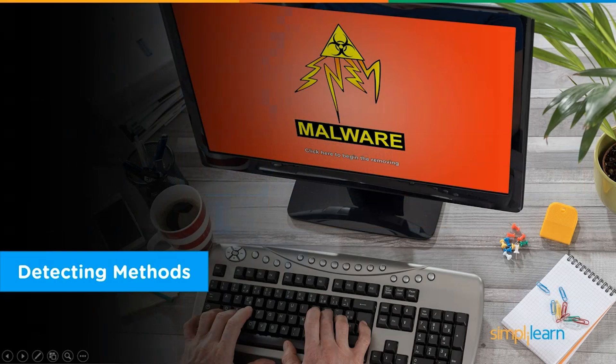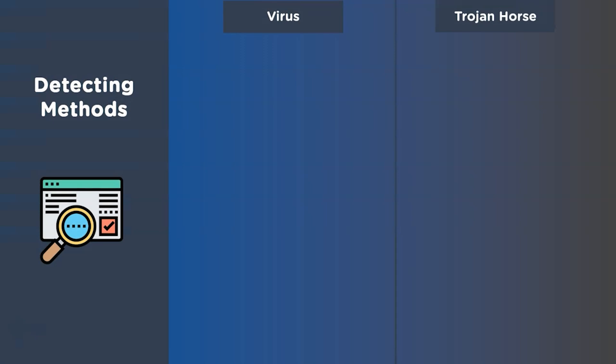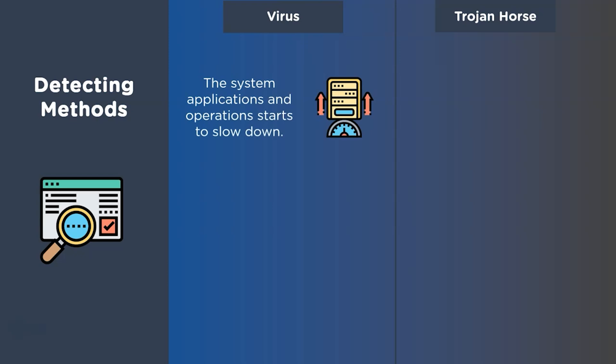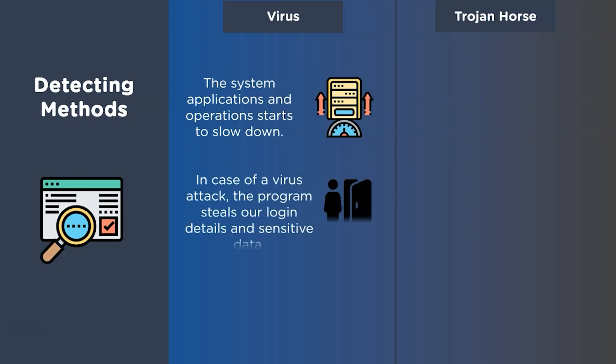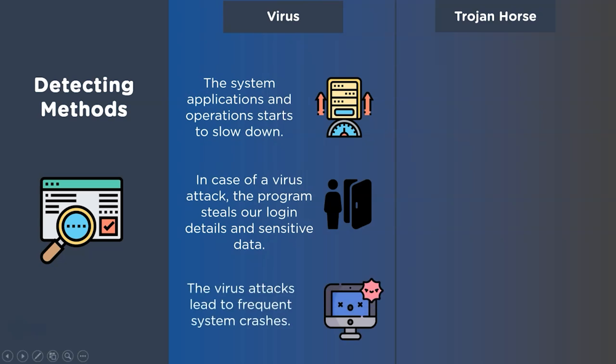Now let's understand how to detect the activity of viruses and trojans in our system. For viruses: slowing down of the system and frequent application freezes indicate virus infection. Viruses can also steal sensitive data including passwords and account details, leading to unexpected logouts or corruption of data. Lastly, frequent system crashes due to virus infection can damage the operating system.